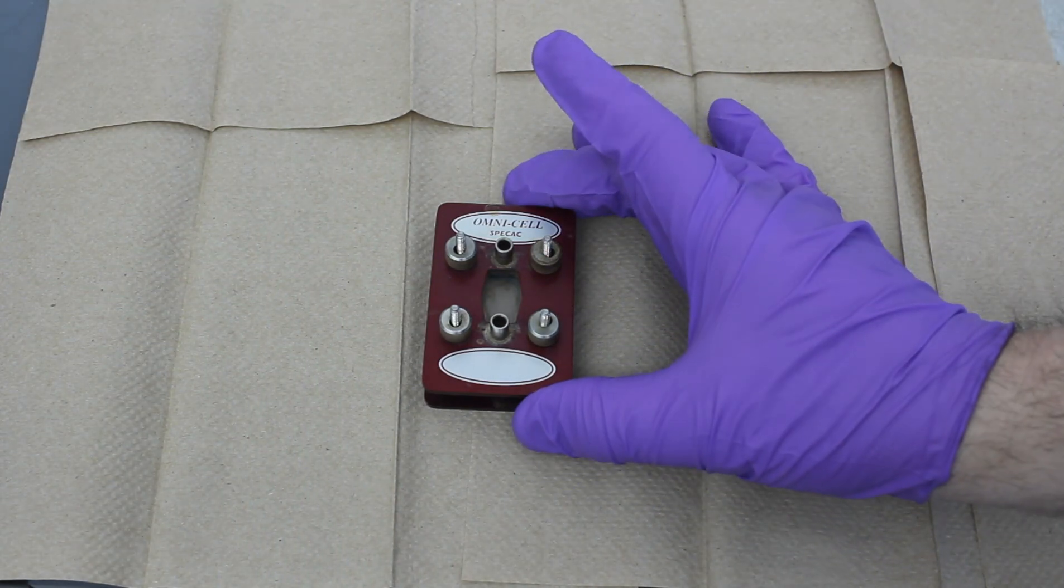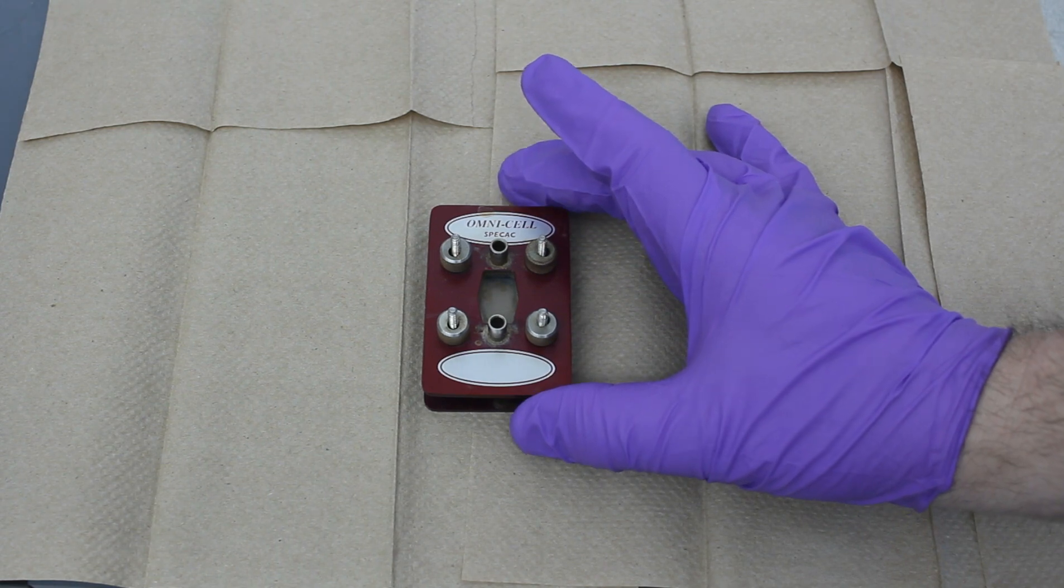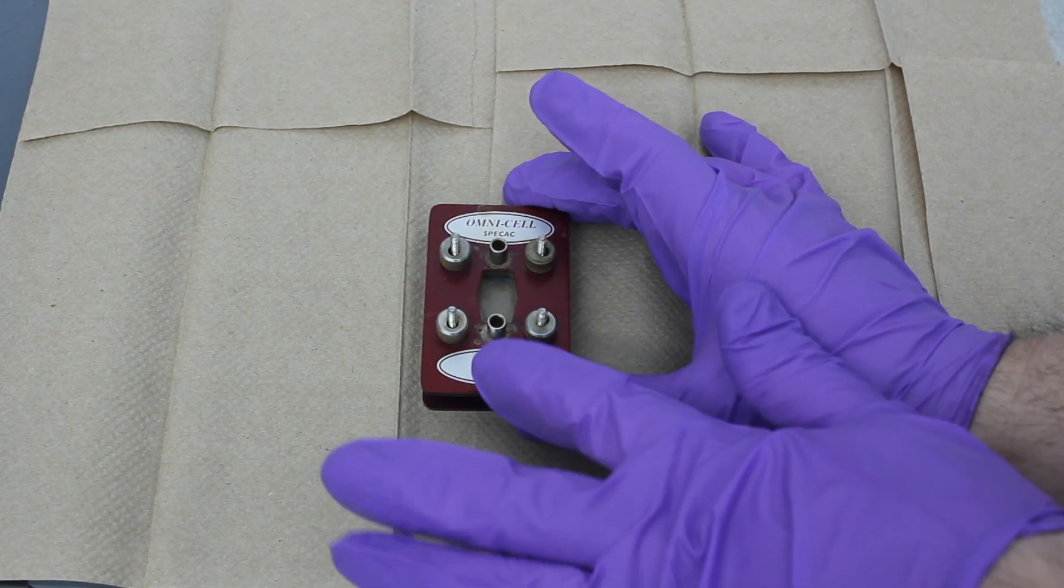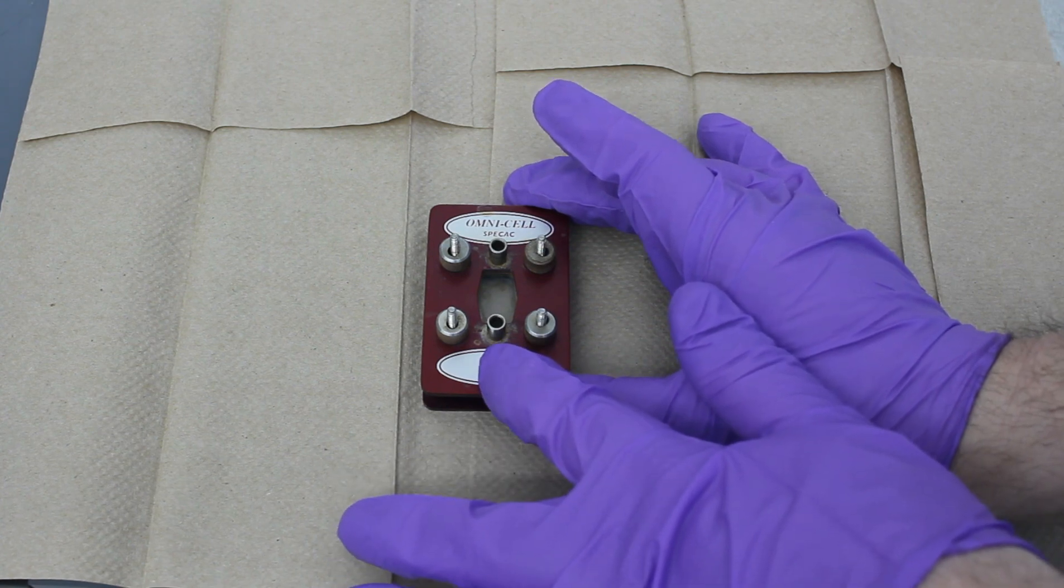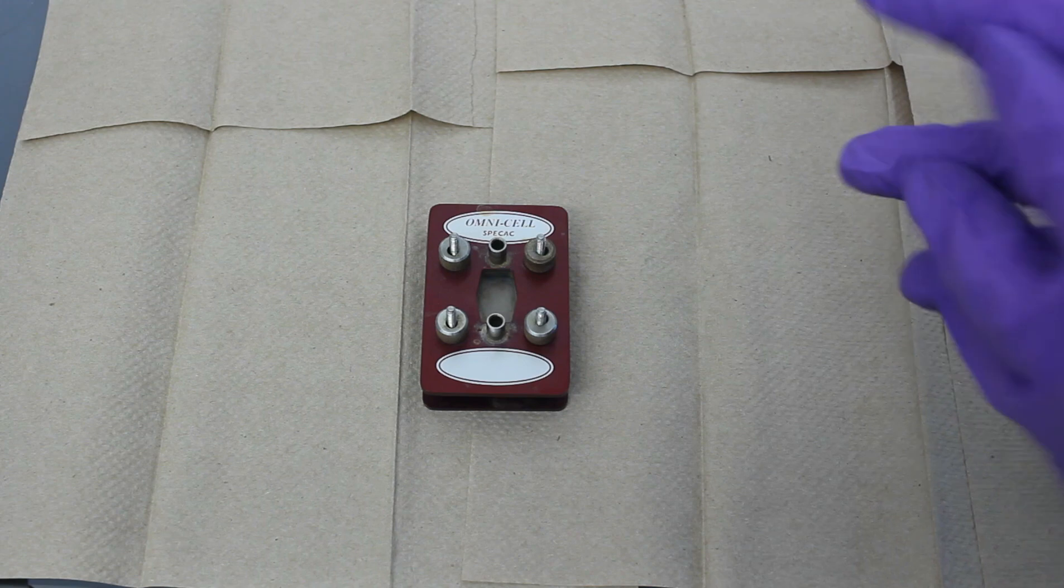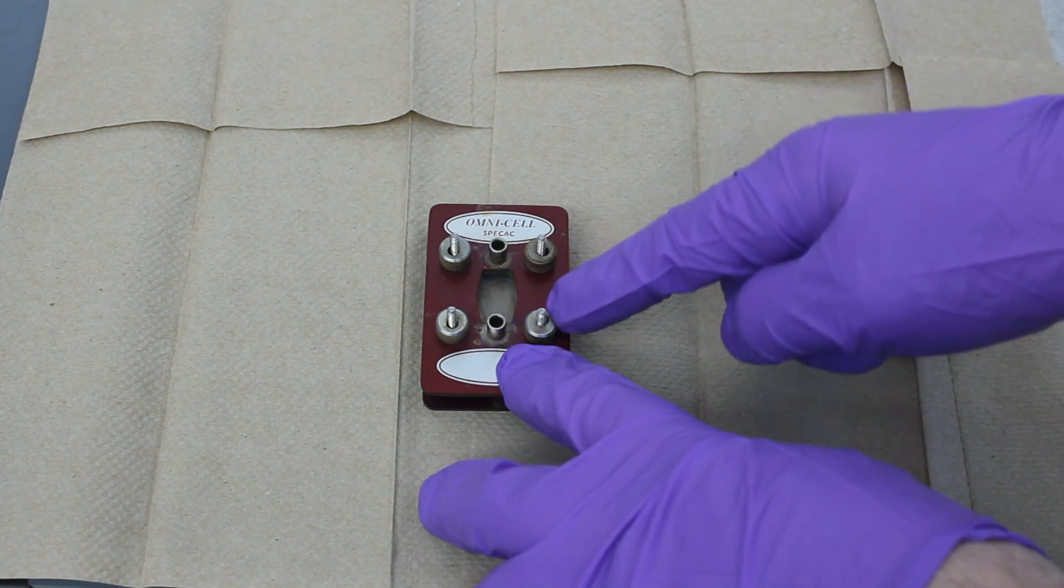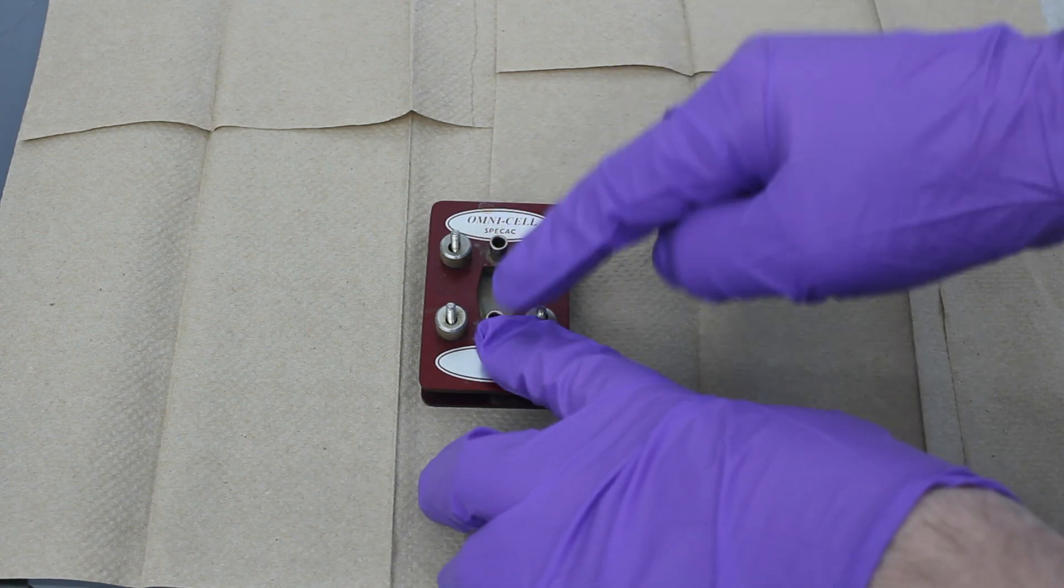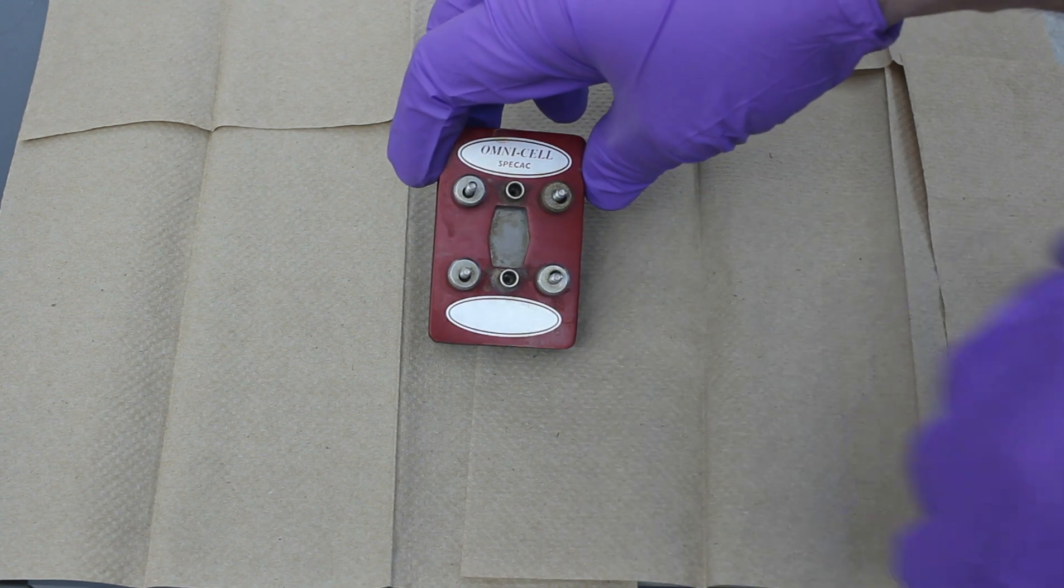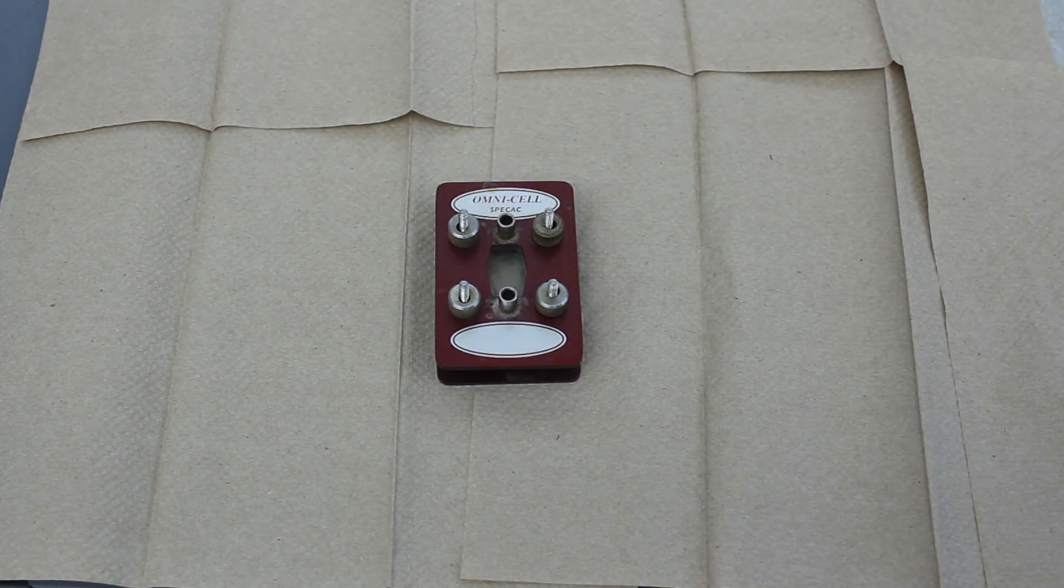This is an FTIR flow cell, an infrared flow cell. I work with air-sensitive compounds, so we have a solution that's being pressurized with argon or nitrogen, goes through the flow cell and out—inlet, outlet—and then through this window. In this case, a sodium chloride window, we use that to collect our data.